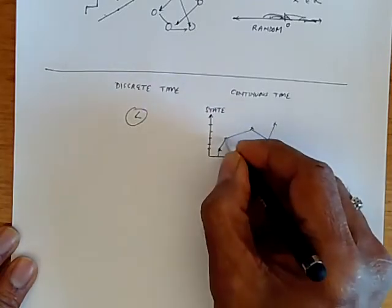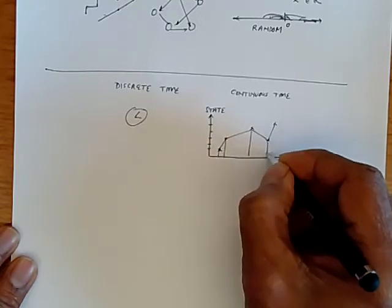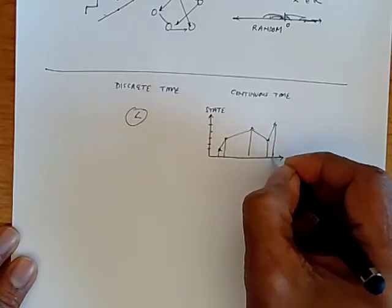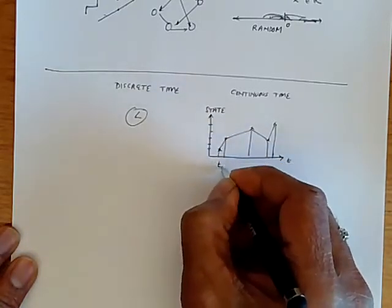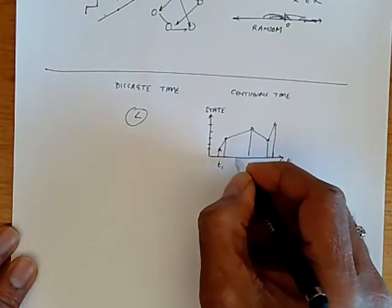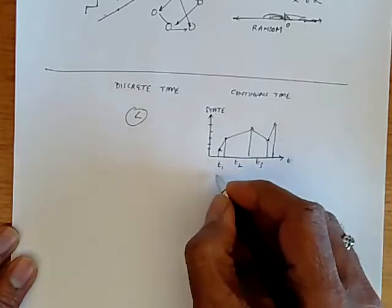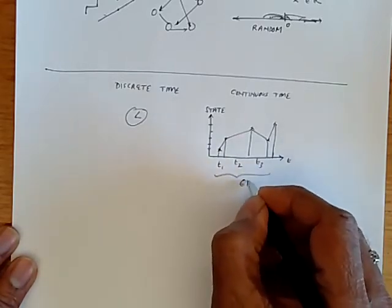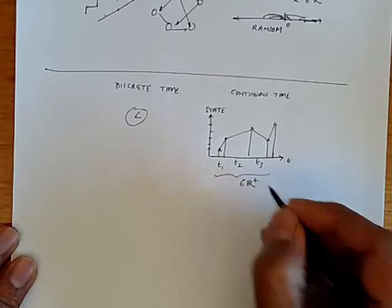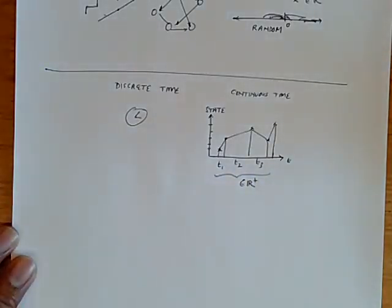And so you can think of t1 as being the time between the first two transitions, t2 the time between the second two transitions, et cetera. And these time intervals are drawn from actually r plus, they're positive real numbers. And these are the intermovement or interstate transition time intervals.